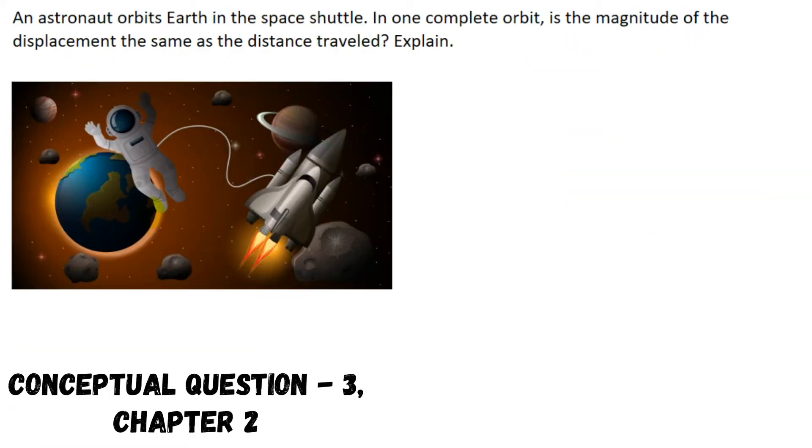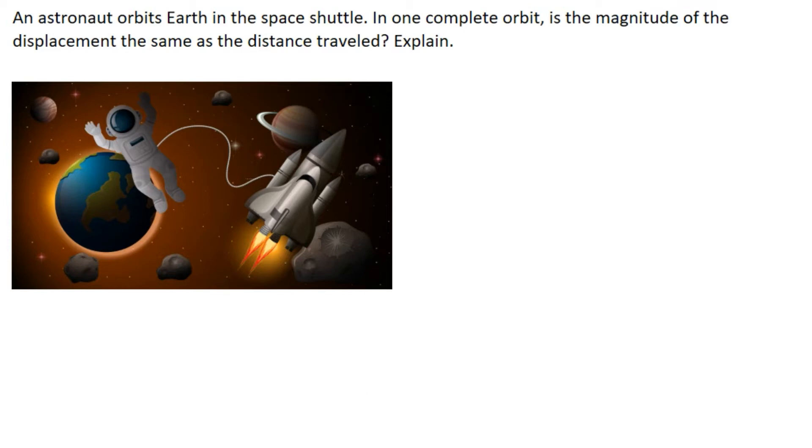Now here we are given that an astronaut orbits Earth in the space shuttle. Now we have to tell that after one complete orbit is the magnitude of displacement the same as the distance traveled. Now here we see that in one complete revolution the final position and the initial position is same. So displacement will be zero. But distance is not zero because distance is the total length of the trip. So distance is not zero and displacement is zero. Therefore the answer is no. The displacement and distance is not same.